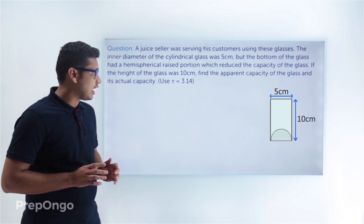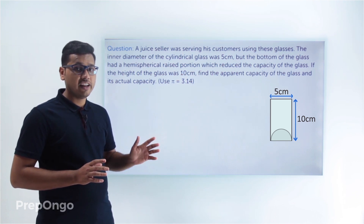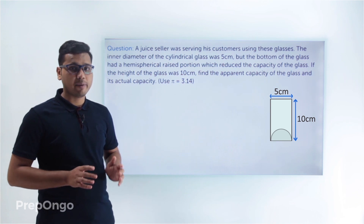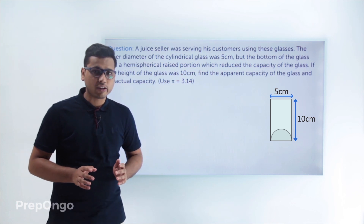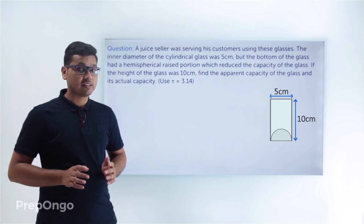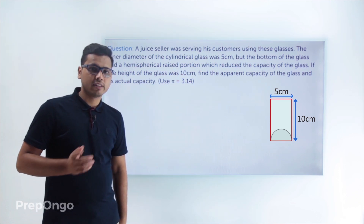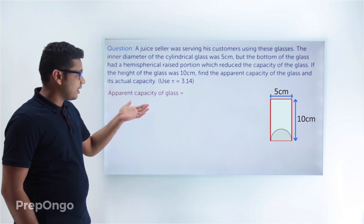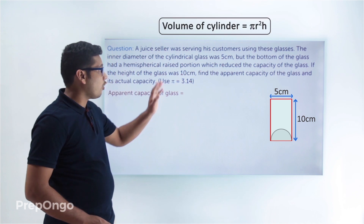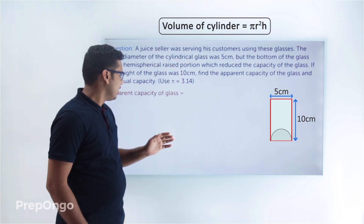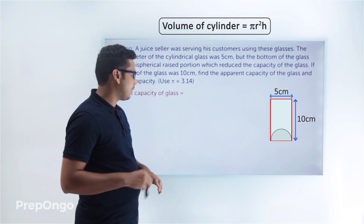We have to find the apparent capacity of the glass — the capacity we feel the glass has — and the actual capacity of the glass. We can calculate the apparent capacity by calculating the volume of the cylinder. So the apparent capacity equals the volume of the cylinder, which is πr²h.